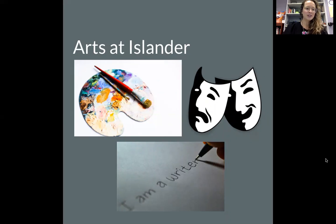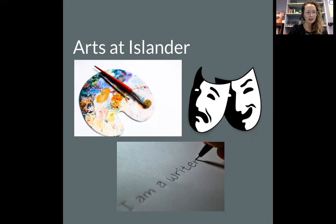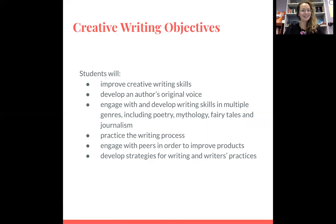A little bit about the arts rotation here at Islander. Creative writing is one of three art blocks that your student will receive their sixth grade year. For one trimester, it'll be creative writing. For the second trimester, it'll be either art or drama. And then the third trimester will be whatever they didn't have. So they'll receive a total of three art classes for this fine arts elective in their sixth grade year. Creative writing is a super fun class, particularly because I'm a language arts teacher — it's nice to delve into more unique writing than we often get a chance to do in the regular language arts curriculum.